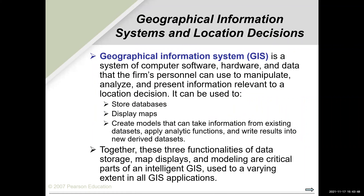Geographic Information Systems (GIS) are becoming very popular for location decisions. GIS is a system of computer software, hardware, and data that personnel can use to manipulate, analyze, and present information relevant to a location decision. It can store databases, display maps, and create models that take information from existing data sets, apply analytic functions, and write results into new derived data sets. These three functionalities — data storage, map display, and modeling — are critical parts of an intelligent GIS application.